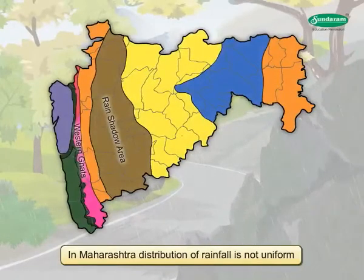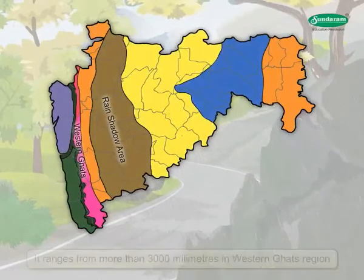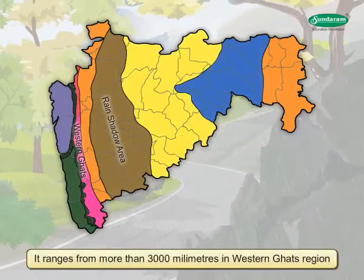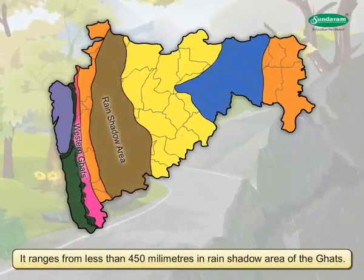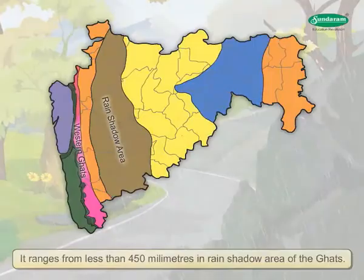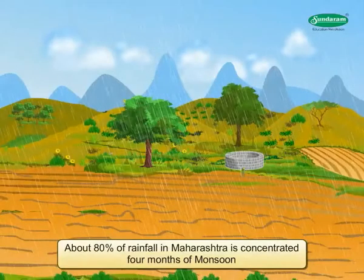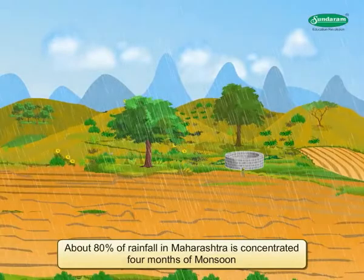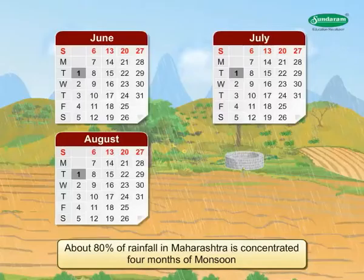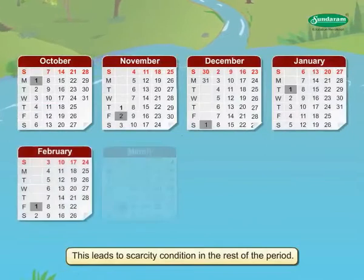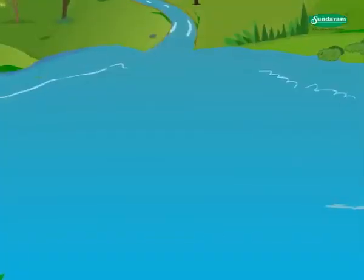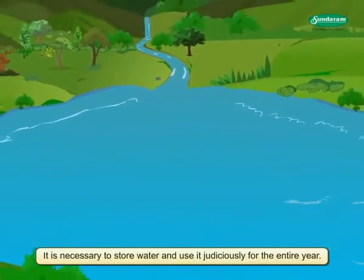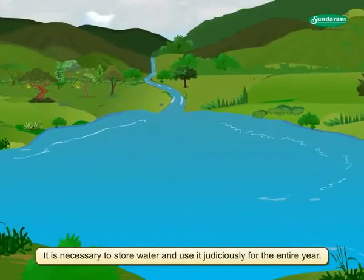Maharashtra's distribution of rainfall is not uniform and it ranges from more than 3000 mm in the Western Ghats region to less than 450 mm in rain shadow areas of the Ghats. But 80% of rainfall in Maharashtra is concentrated in 4 months of monsoon, which leads to scarcity conditions in the rest of the period. Hence, it is necessary to store water and use it judiciously for the entire year.